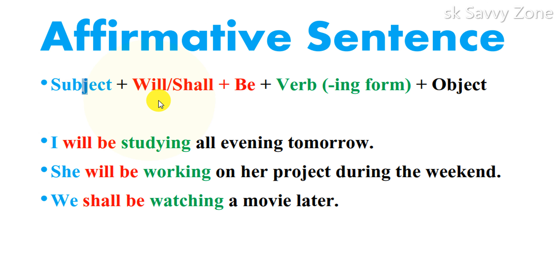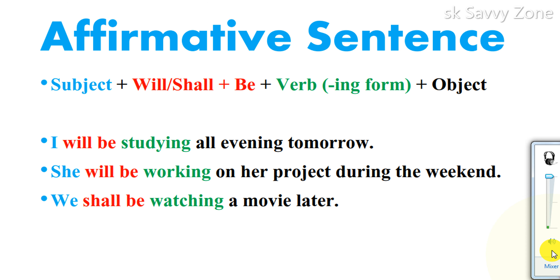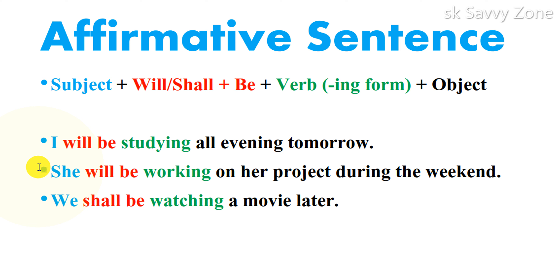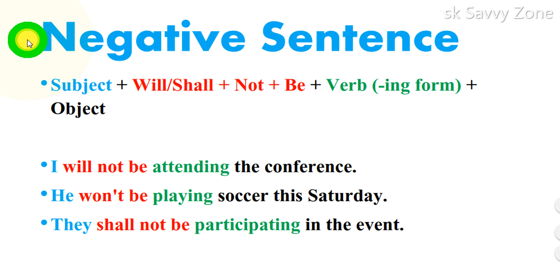The affirmative sentences in the future continuous tense follow the formula: Subject + will/shall + be + verb-ing (present participle). For example: 'I will be studying all evening tomorrow,' 'She will be working on her project during the weekend,' and 'We shall be watching a movie later.'